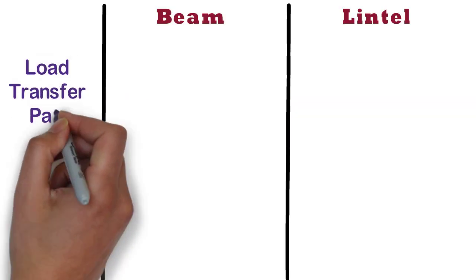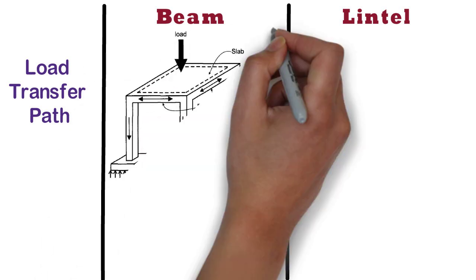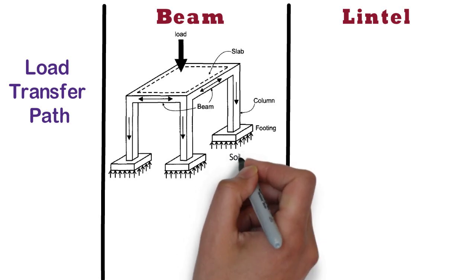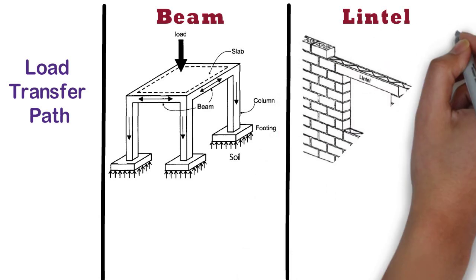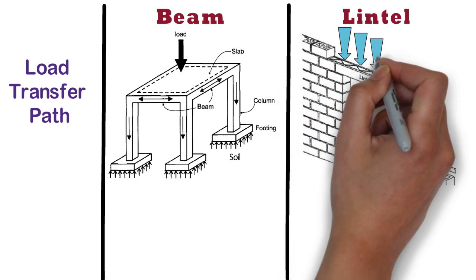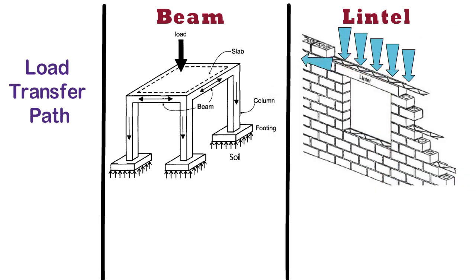Load Transfer Path. The beam carries the load from the slab and transfers it to the column. From the column, it is transferred to the footing and from the footing finally to the soil. Whereas, the lintel carries the load of the wall above the openings and transfers it to the walls only.